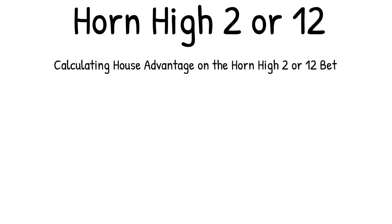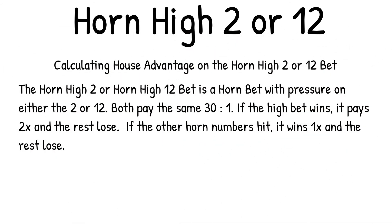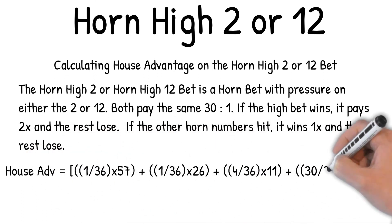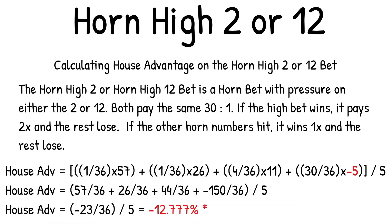Calculating house advantage on the Horn High Two or Twelve bet: this is a Horn bet with pressure on either the two or twelve; both pay the same 30 to one. If the high bet wins it pays two times and the rest lose; if other Horn numbers hit it wins one time. House advantage equals one out of 36 times 57 for the high two or twelve, plus one out of 36 times 26 for the non-high two or twelve, plus four out of 36 times 11 for the three or eleven, plus 30 out of 36 losing bets times minus five. Divide by five dollars: 57 + 26 + 44 minus 150 out of 36, divided by five, equals minus 23 out of 36 divided by five, equals minus 12.777% house advantage.